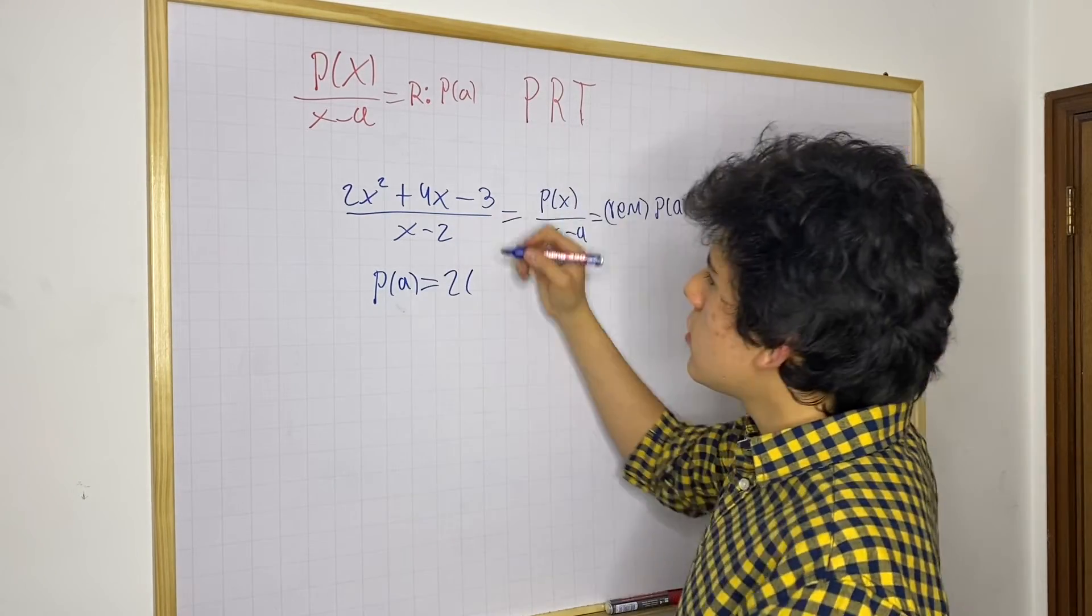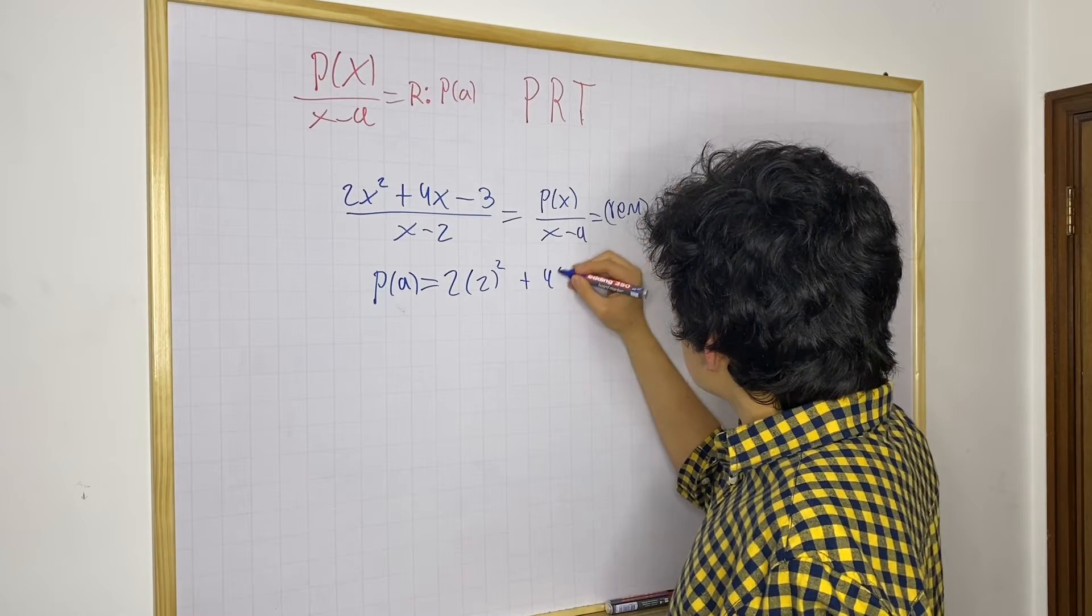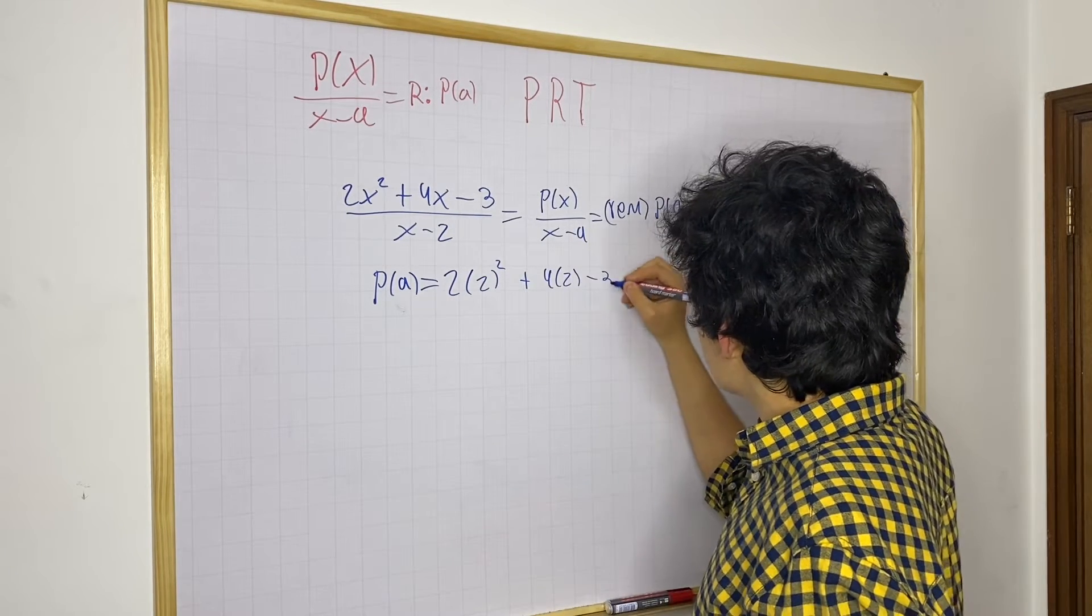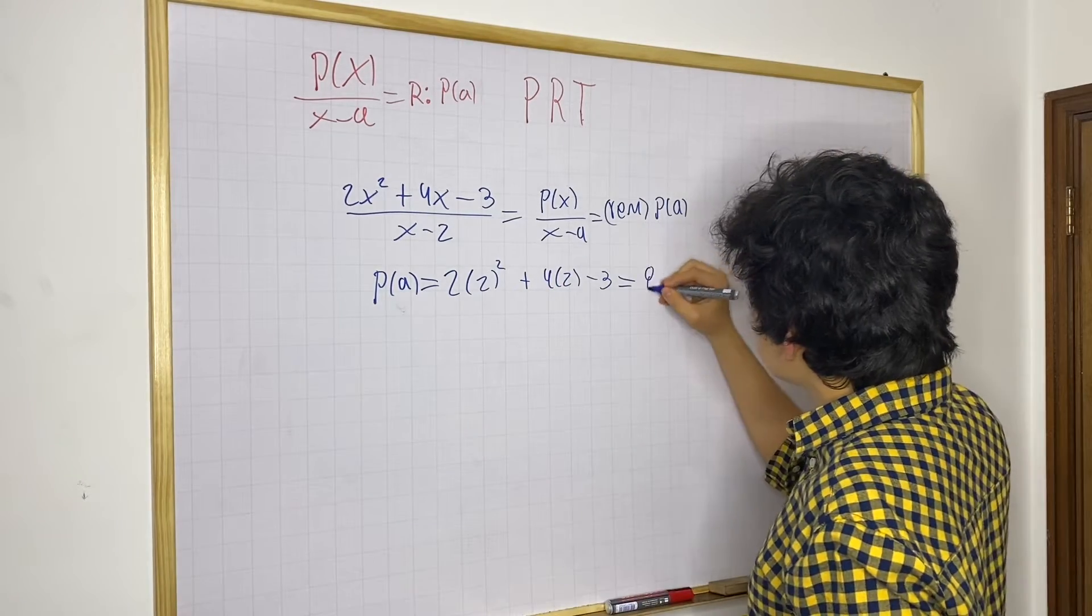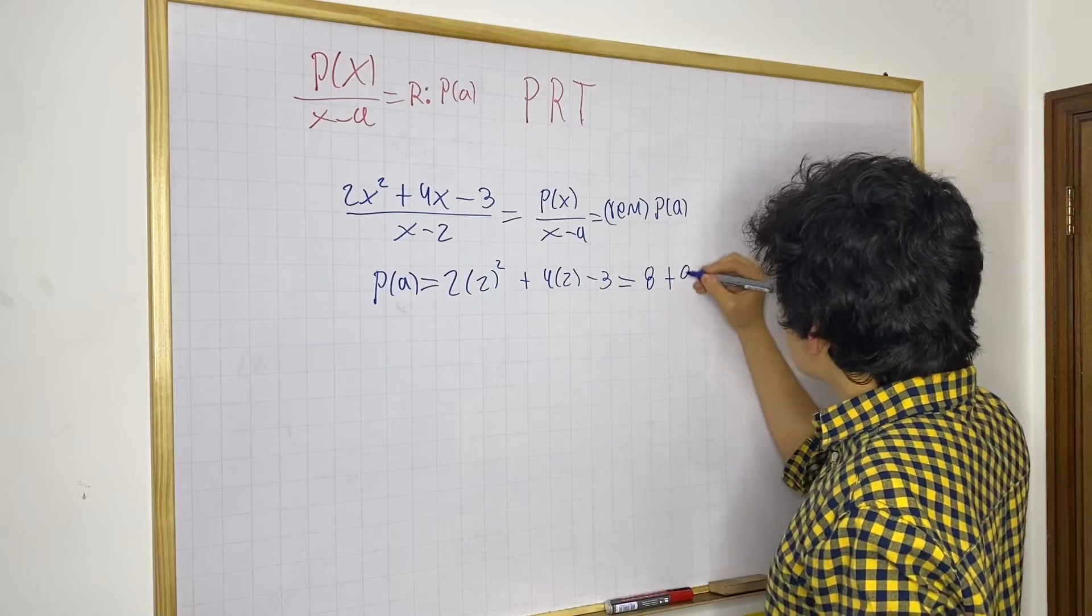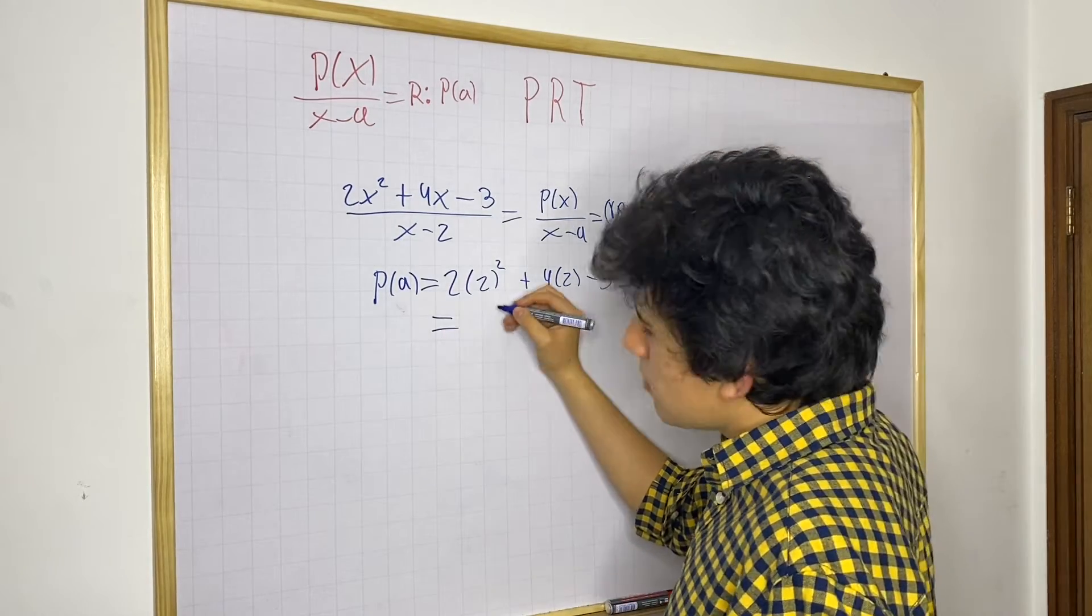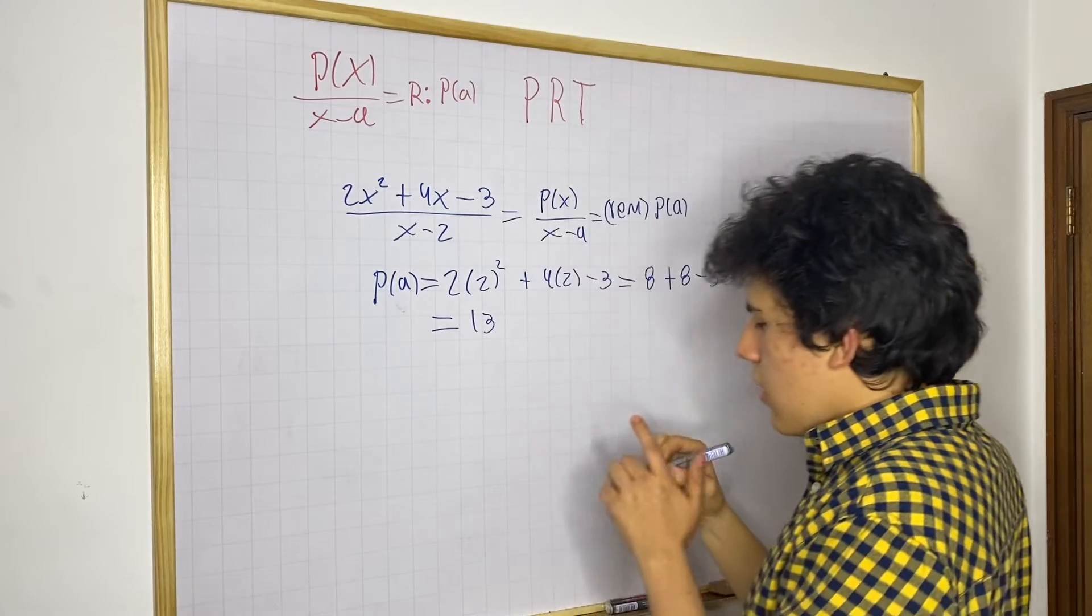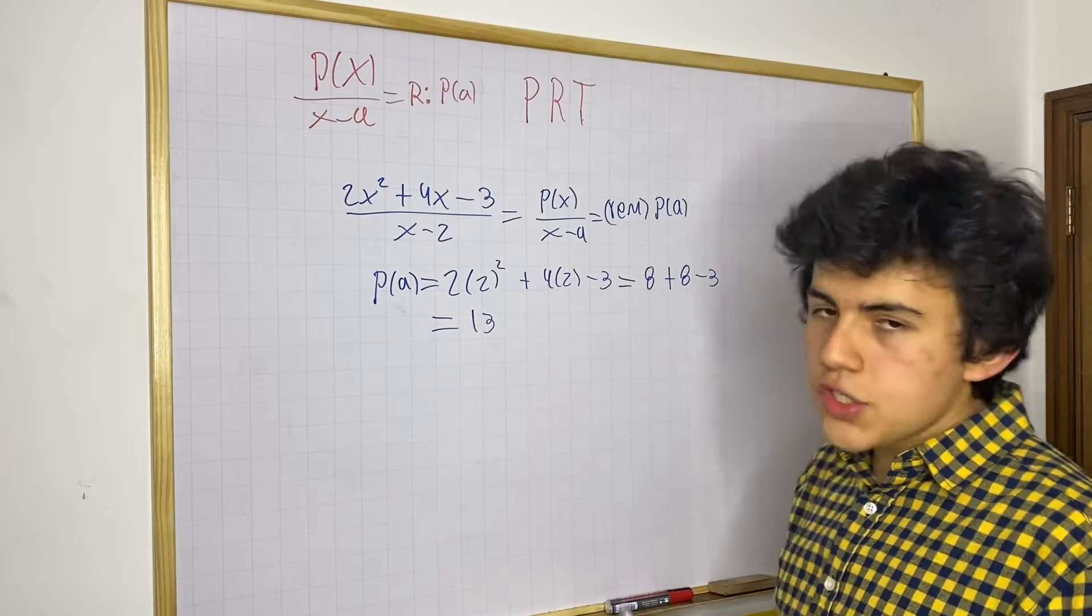We have 2 times 2 squared, plus 4 times 2, minus 3. And this is going to be equal to, we get 4 times 2, 8, plus 8, minus 3. This is equal to 16 minus 3, we know that is 13. So that means that the remainder of this division should be 13.